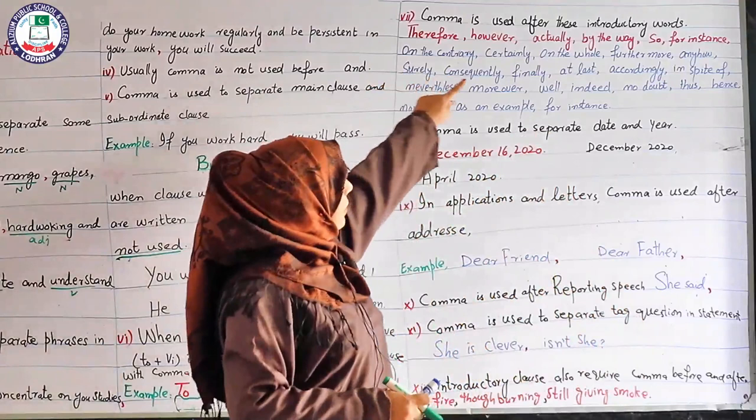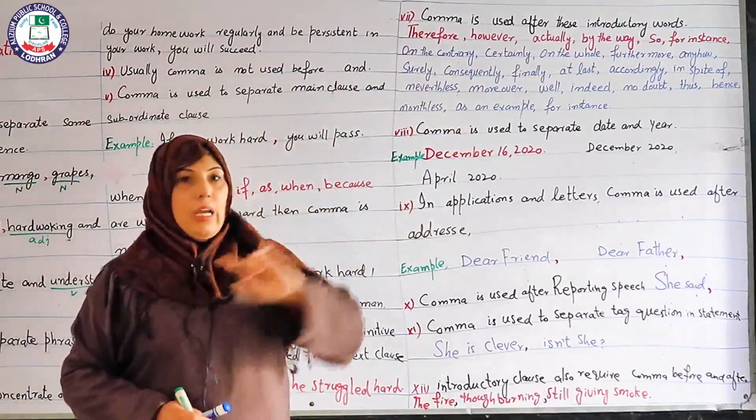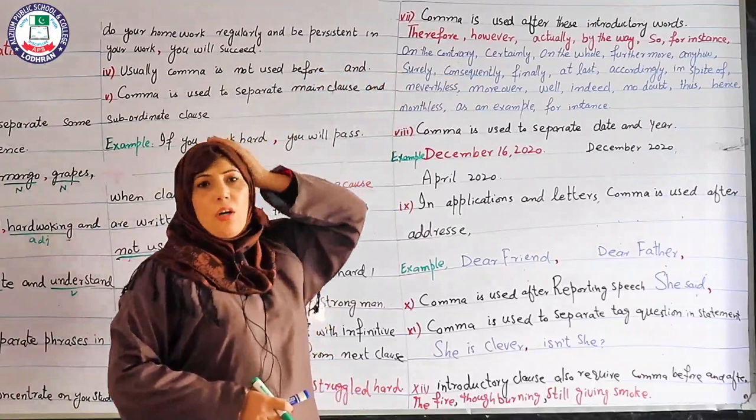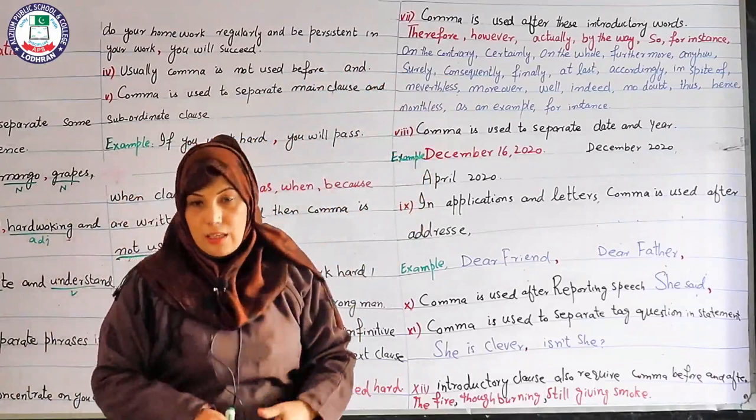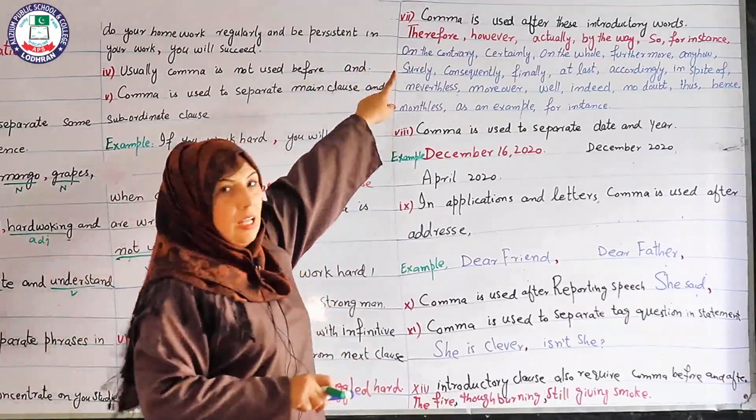There are some introductory words. Wherever they appear in a sentence — at the beginning, in the middle, anywhere — a comma must be placed after them. This is often not carefully written in private publishers' books or common literature, but you must memorize these words. Wherever these words are used in a sentence, a comma is mandatory after them. The list starts from 'therefore' (marked in red) to the last word (marked in blue).